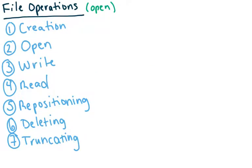Let's talk a bit more about the open operation because it's important. Many of these basic operations require the file to be open first. Creation does not require it to be open, but writing, reading, and repositioning do. Deleting doesn't require it, but truncating does — you open the file, delete the contents, then close it. So open is really important.